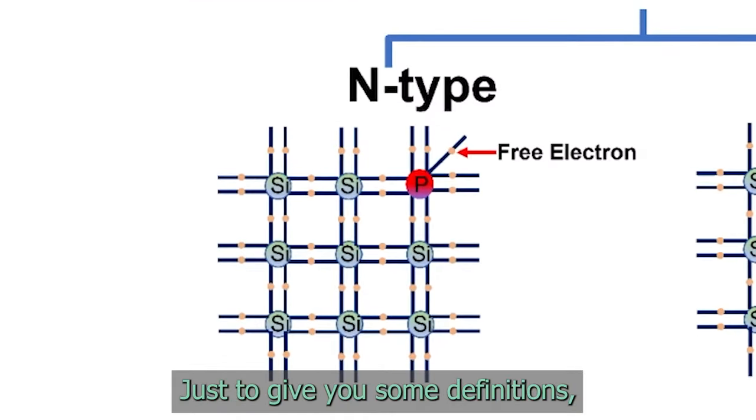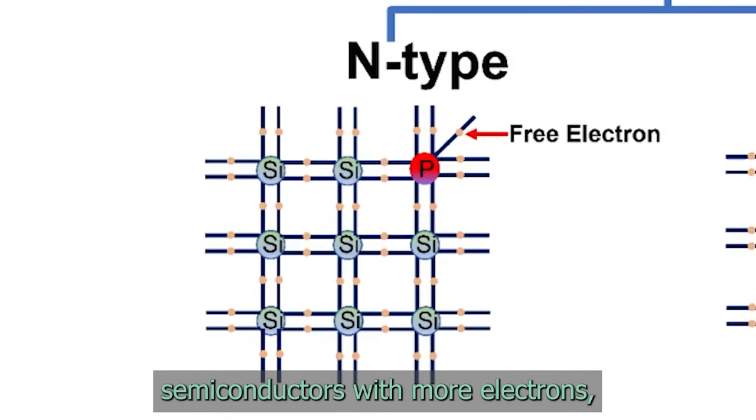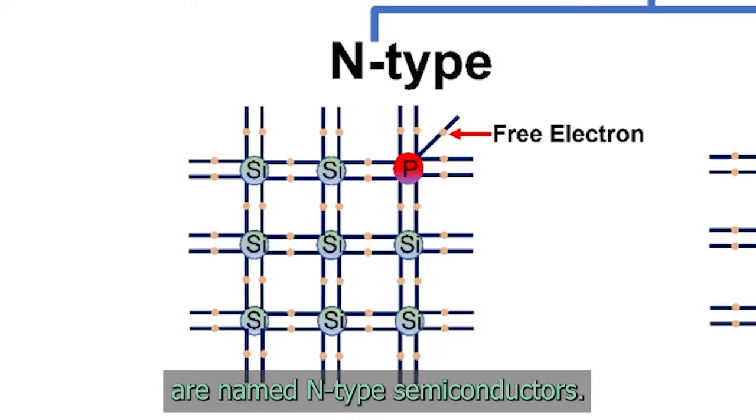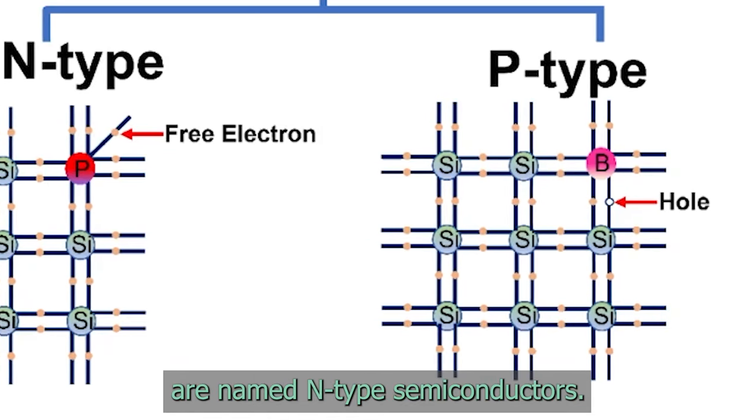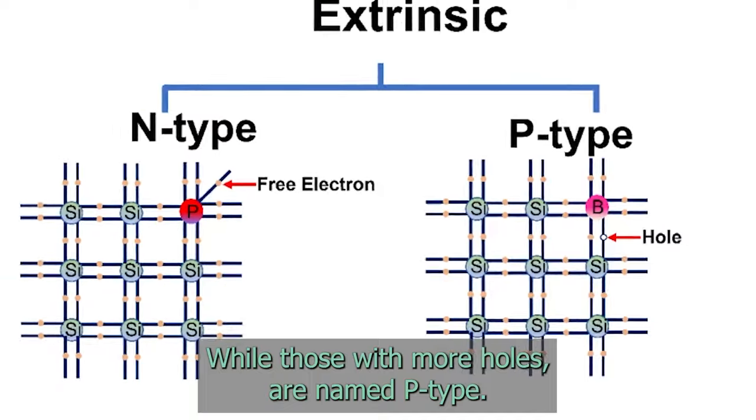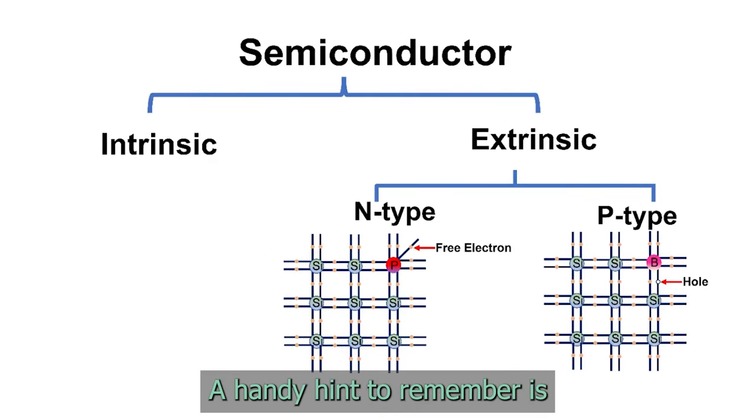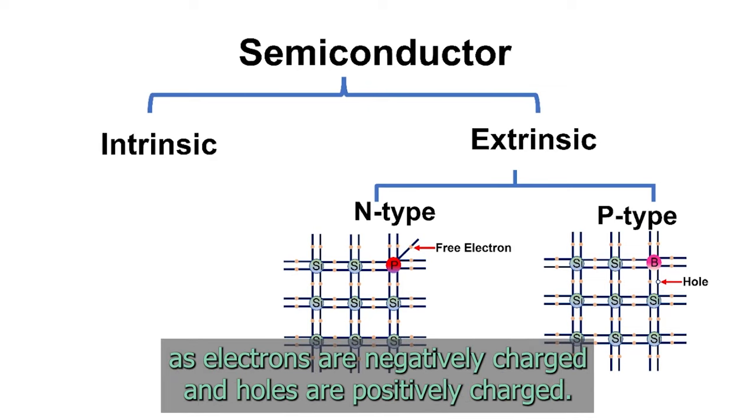Just to give you some definitions, semiconductors with more electrons are named N-type semiconductors, while those with more holes are named P-type. A handy hint to remember is N for negative and P for positive, as electrons are negatively charged and holes are positively charged.